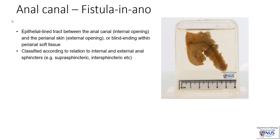Fistula in anal is an epithelial-lined tract between the anal canal, which is the internal opening, and the perianal skin, which is the external opening. Sometimes it can be more like a sinus, which is a blind-ending tract that ends in the perianal soft tissue.